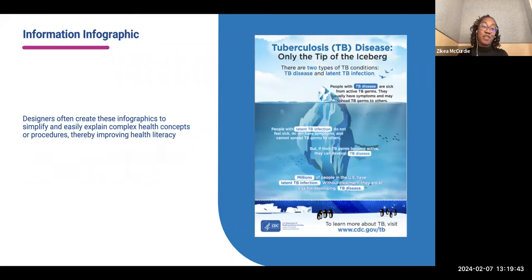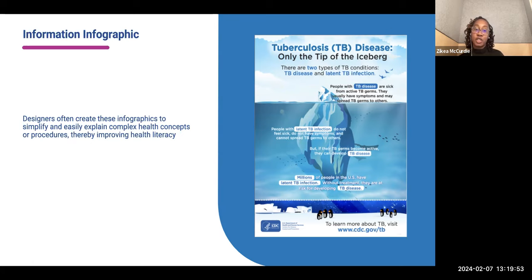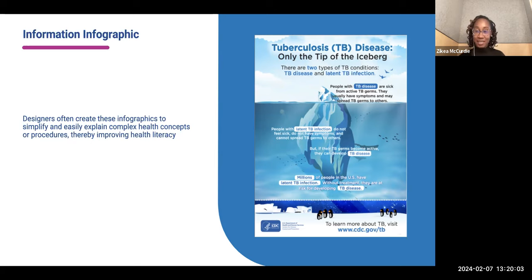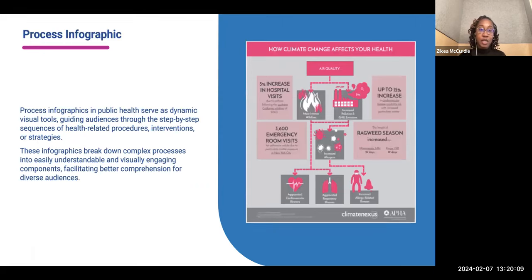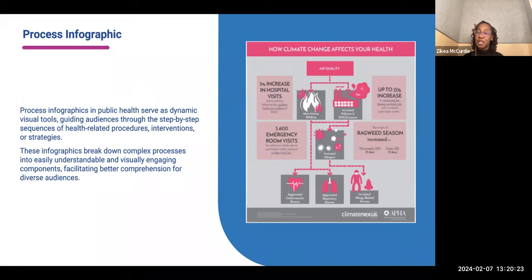Next is an information infographic. Here infographics are pretty simple, and they're used to explain complex health concepts or procedures in order to improve health literacy. For example, there's an infographic sharing more information about what TB is. Then we have process infographics — visual tools that guide audiences through a step-by-step sequence of procedures, interventions, or strategies. These break down complex processes into something easily understandable and visually engaging, which helps with better comprehension with the target audience.